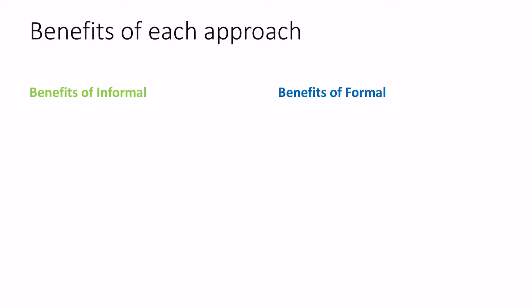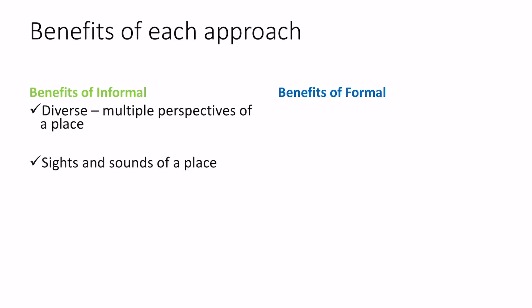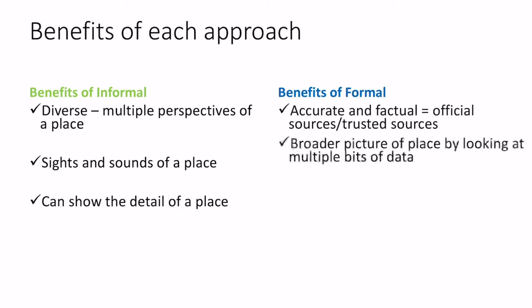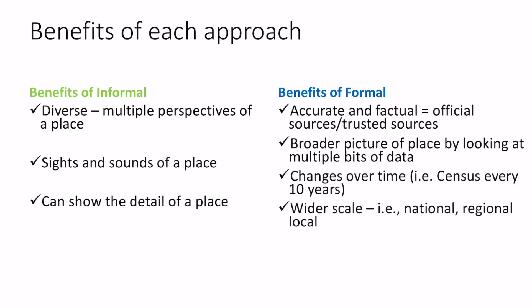To recap the benefits of each approach: informal gives us multiple perspectives, it's very diverse, it gives us the sights and sounds of a place, it can zoom in to show detail or zoom out to show wider context. It's often used at a local scale and shows a variety of viewpoints and opinions. Formal is accurate and factual — it uses statistics from official sources like the government, so we can trust it. It gives you lots of data so you get a wider picture. You can track changes over time, for example how ethnicity changes across 10-year census periods. It can be viewed at a national scale and still go down to household level, so a variety of scales are available with formal.